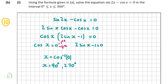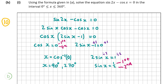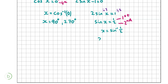On the right-hand side, we have 2 sine x minus 1 equals 0. Adding 1 to both sides gives 2 sine x equals 1. Dividing both sides by 2 gives sine x equals one half. This is positive, and we know that sine is positive in the first and second quadrants. So x equals sine inverse of one half, which is 30 degrees in the first quadrant. To find the second quadrant value, we take it away from 180: 180 minus 30 gives 150 degrees. So x equals 30 degrees and 150 degrees.